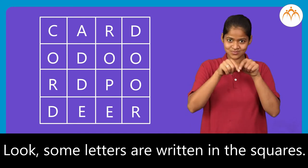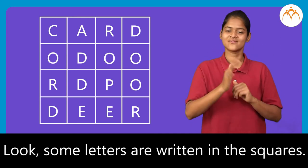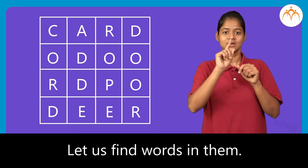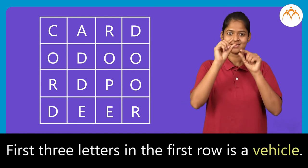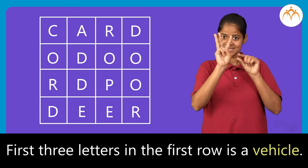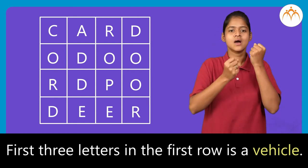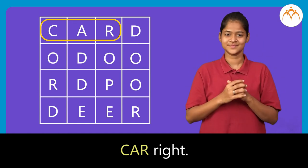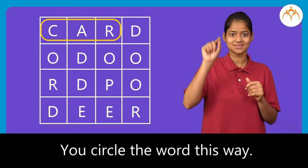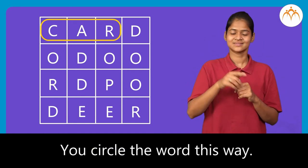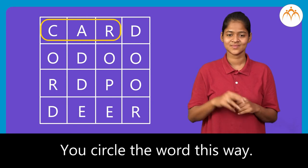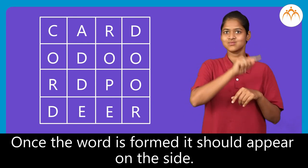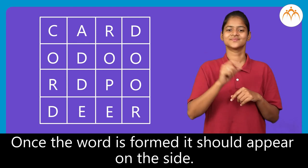Look, some letters are written in the squares. Let us find words in them. The first three letters in the first row is a vehicle. Car. Right. You circle the word this way. Once the word is formed, it should appear on the side.